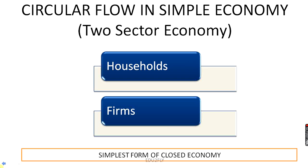Let us start with the circular flow of income. First of all we will study it in the simple economy, which is the two-sector economy. A simple economy assumes the existence of only two sectors: the household sector and the firm sector. The households are the owners of the factors of production and the consumers of goods and services, whereas the firms produce goods and services and sell them to the households. It is the simplest form of closed economy, because there is no government sector and no foreign sector involved in this model.